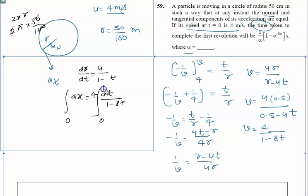The next step: integration of dx is x with limit of integration 0 to π. This is written as ln(1 minus 8t) from limit 0 to t, divided by minus 8.